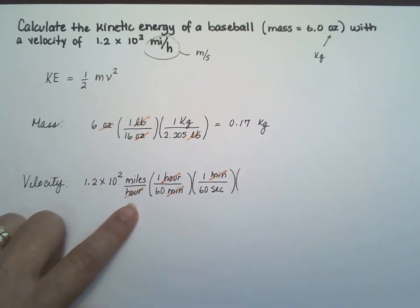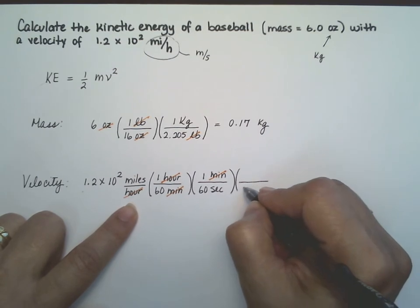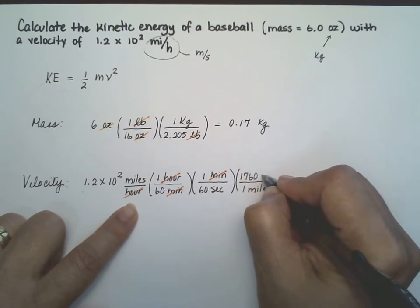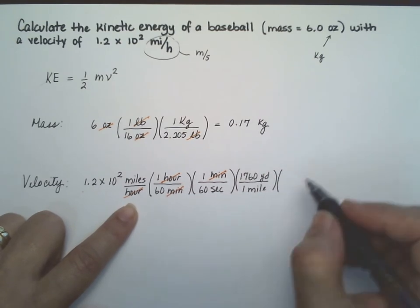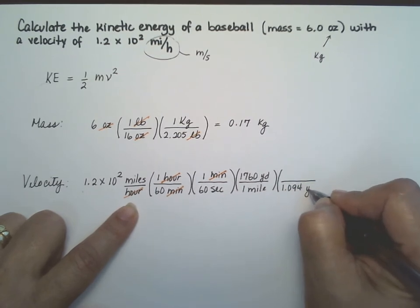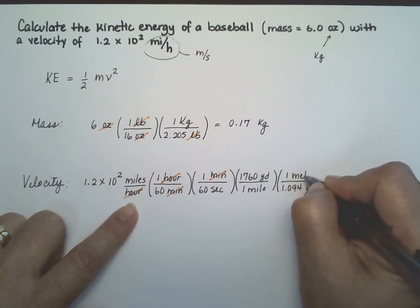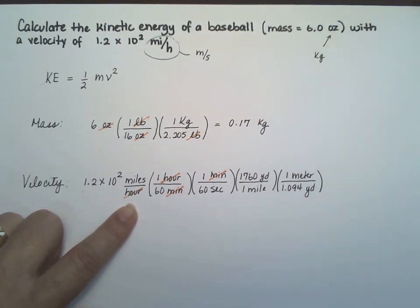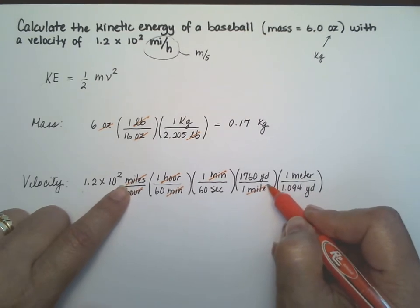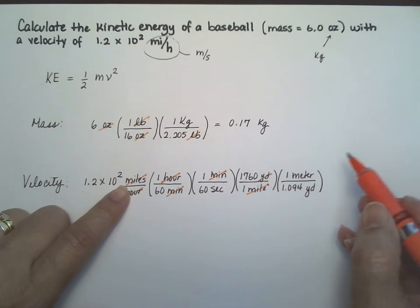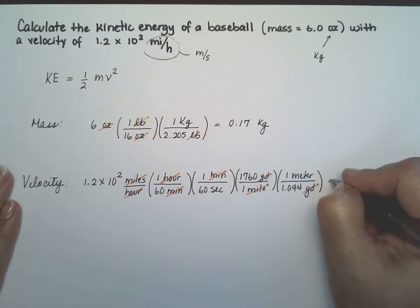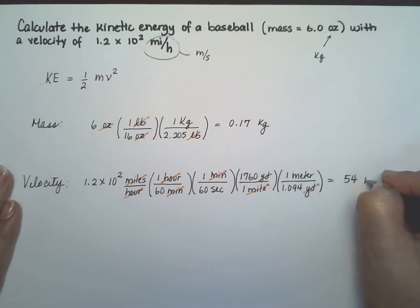That one's a little more complicated. Go back into your book, and you will find that one mile is 1,760 yards. And then 1.094 yards is one meter. All right, let's cancel. You know that I like canceling. Miles over here cancels with the miles over here. And the yards cancel with yards. I have meters and seconds left. So this one right here is 54 meters per second.